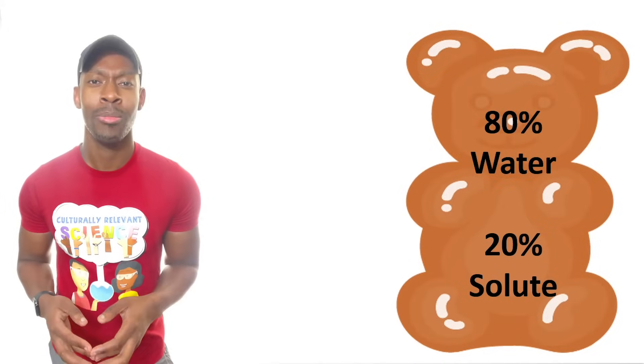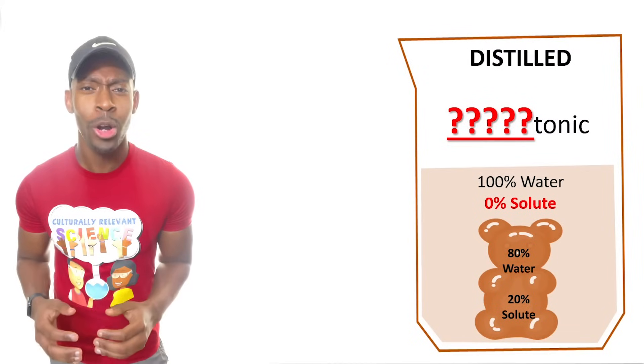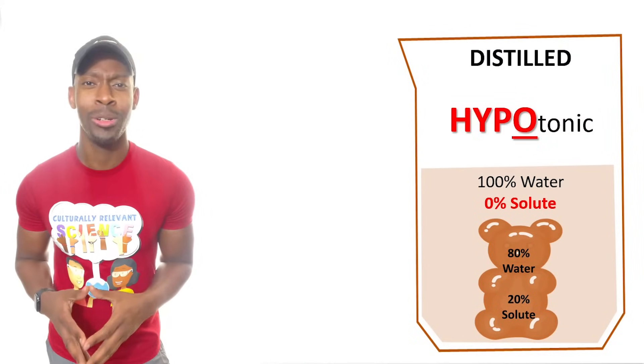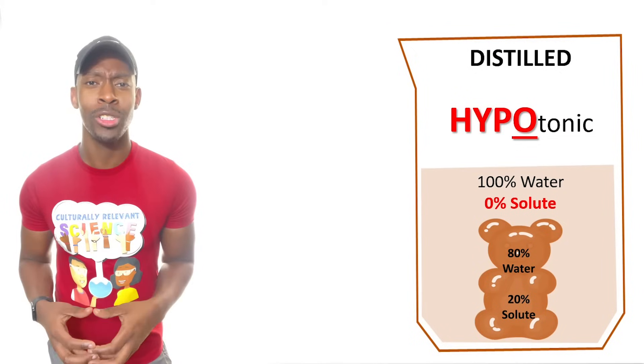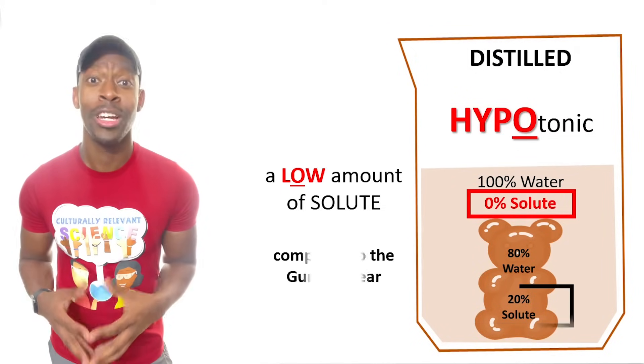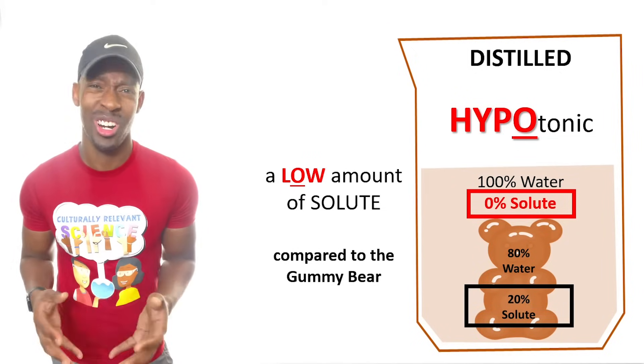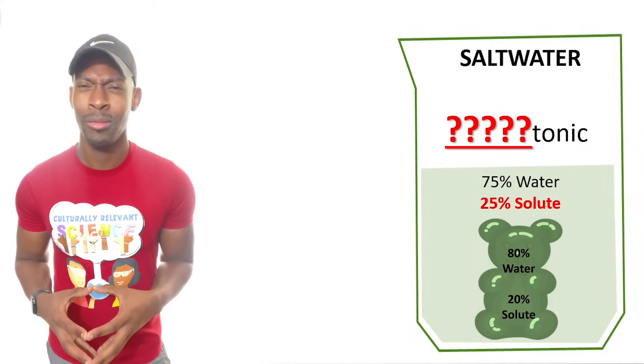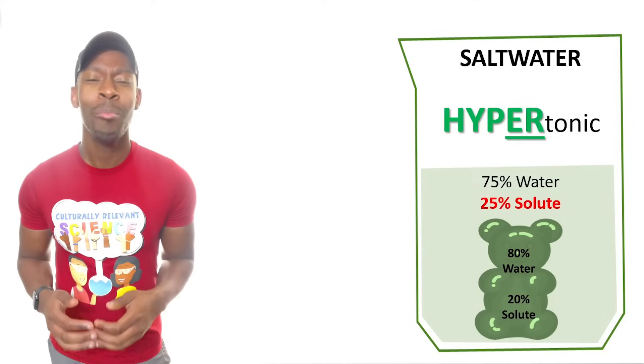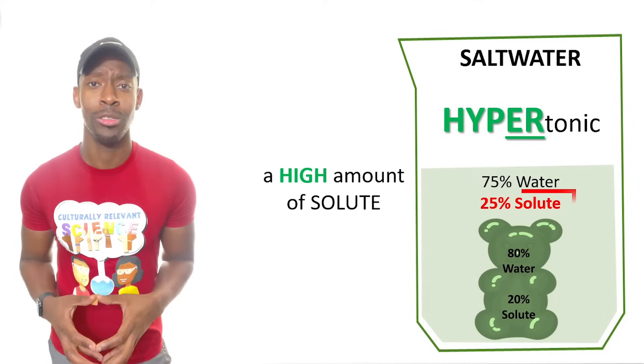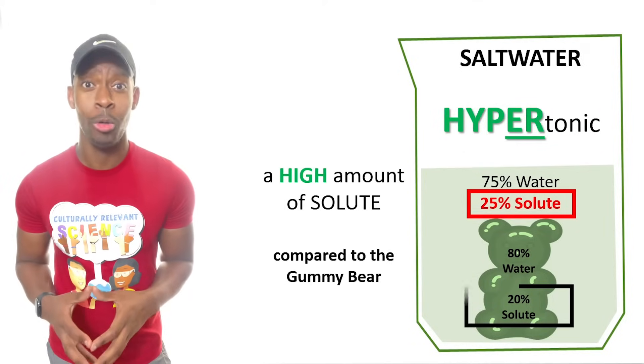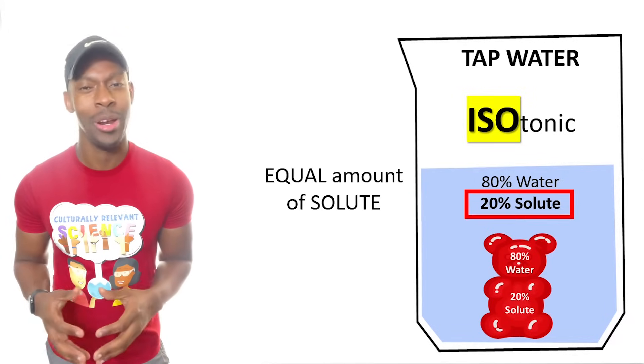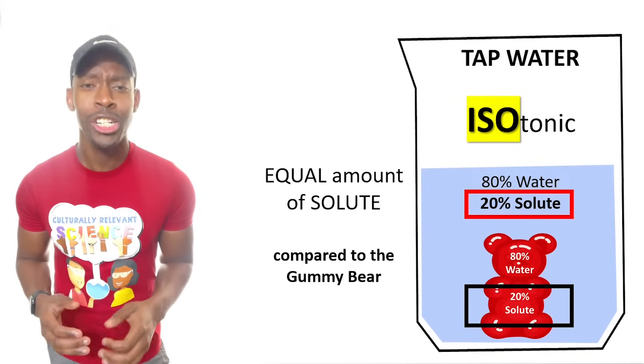Compared to the gummy bear, the distilled water would be a hypotonic solution because it has a lower amount of solute than the gummy bear. It's pure water, shouldn't have that many solutes at all or any. The salt water solution would be hypertonic because it has a higher amount of solute than the bear, and the tap water would be considered isotonic because it has about an equal amount of solute compared to the bear.